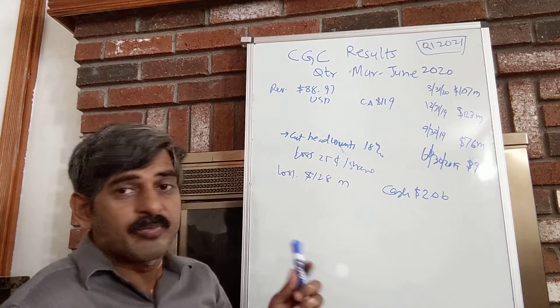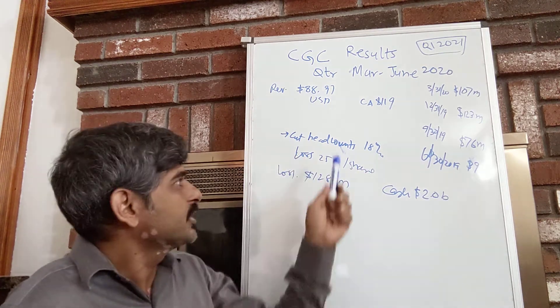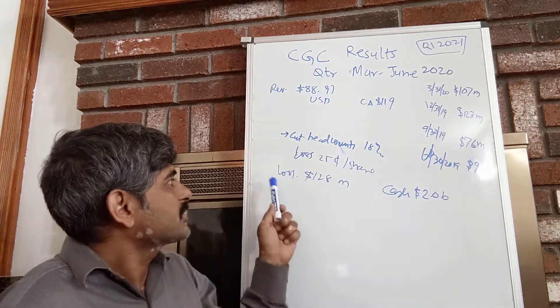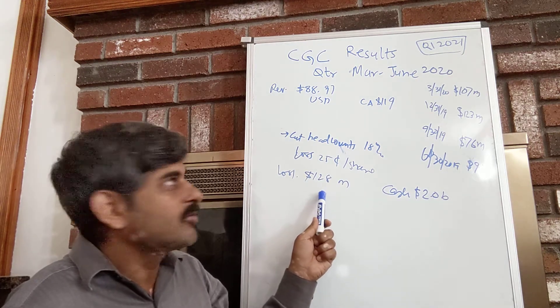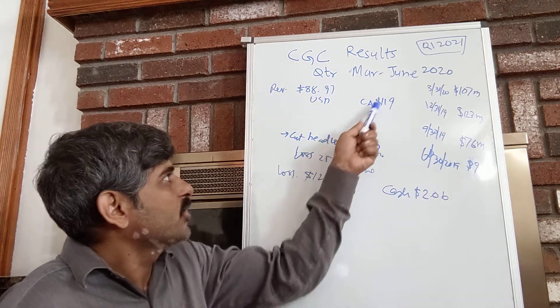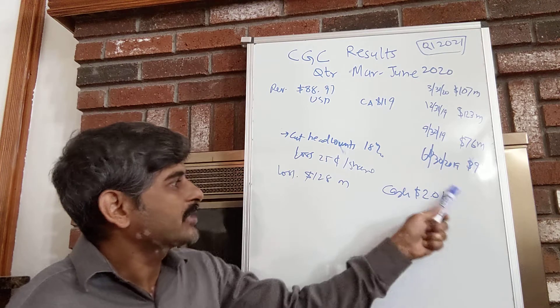So it did some good job in reducing its cost and the losses are still quite a bit like $128 million of losses, that's a lot compared to what its revenue is. But if you look at this it has a lot of cash.